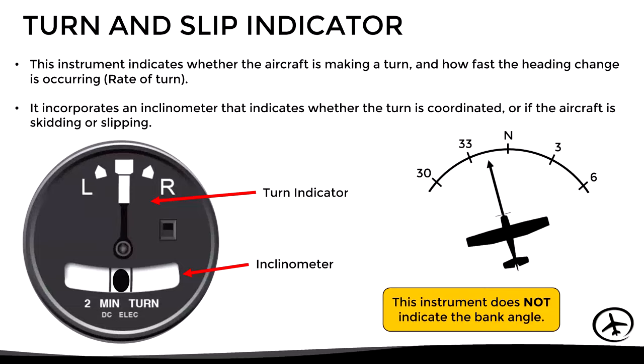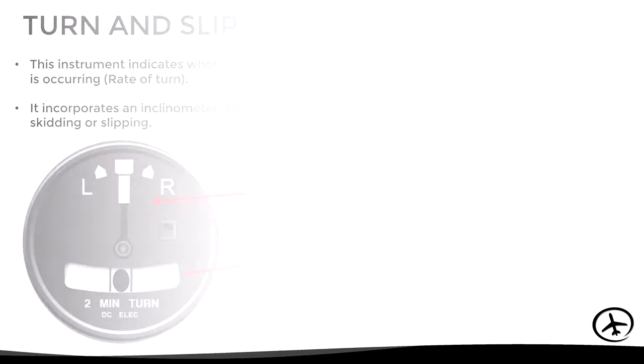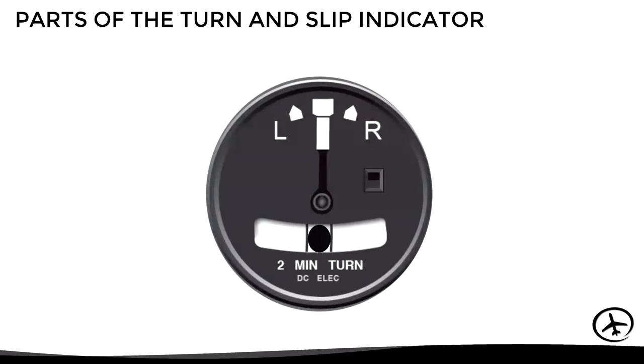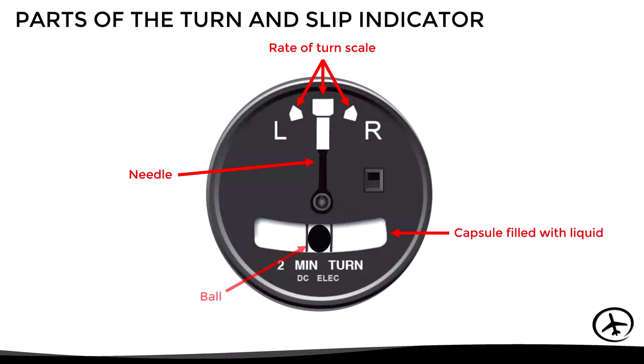Let's look at the parts of the turn and slip indicator. In the upper part we have the rate of turn scale with its corresponding needle, and in the lower part we have the liquid-filled capsule of the inclinometer and a solid ball which is free to move within the capsule.